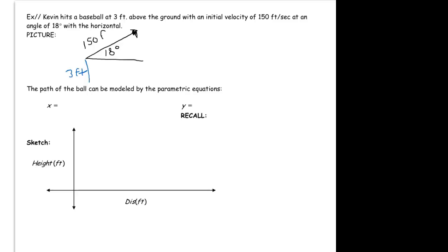We can come up now with the vertical component and the horizontal component of this initial vector. So x is going to equal 150 cosine of 18 degrees.